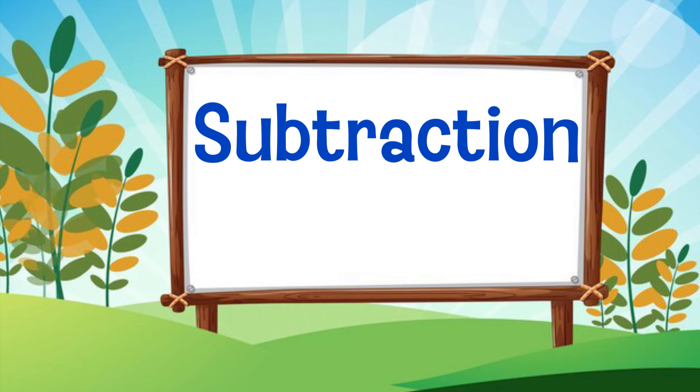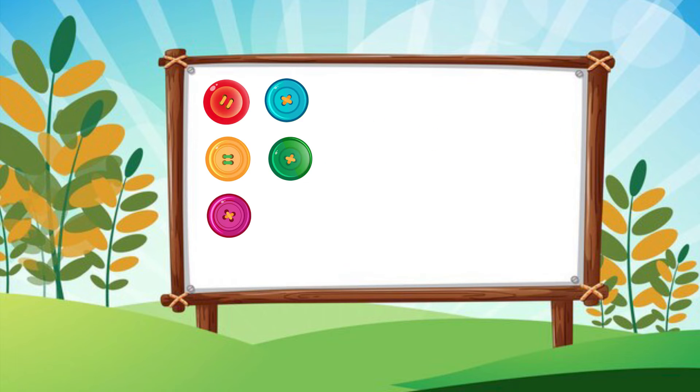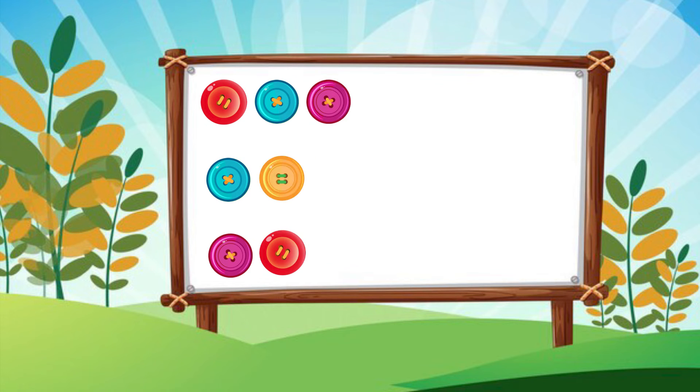Now let's try subtraction. We have seven buttons but we want to take away three of them. Can you figure out how many buttons will be left? You got it! We have four buttons left. Subtraction is just like magic!